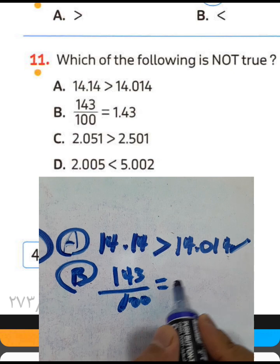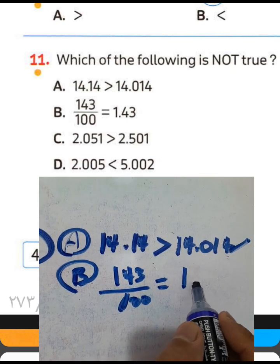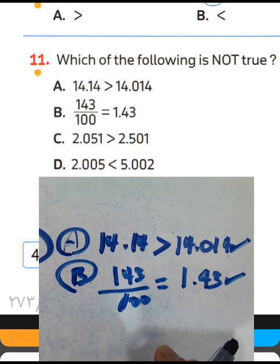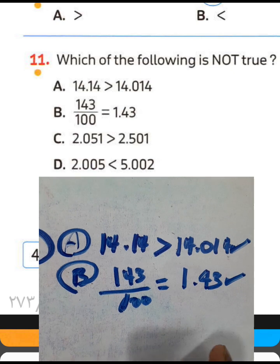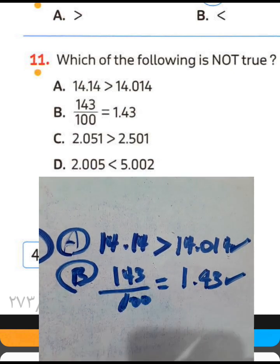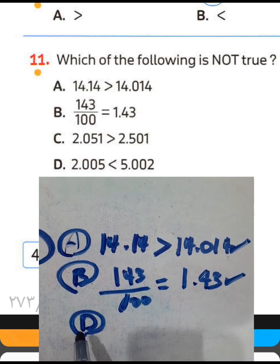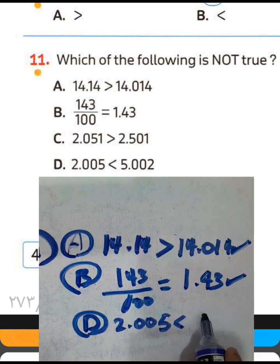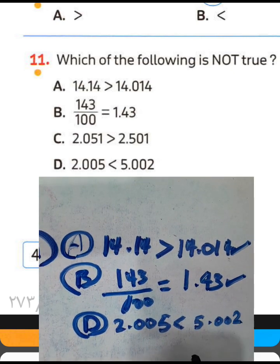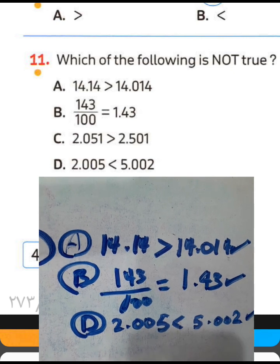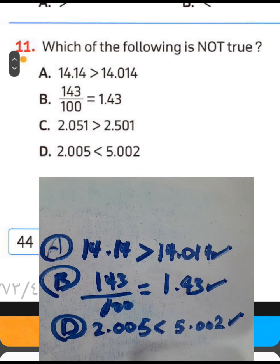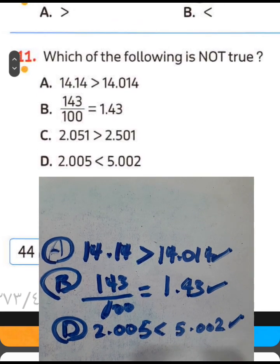Letter B: 143/100 equals 1.43 — that's true, so don't choose letter B. Letter D: 2.005 is less than 5.002 — that's true because 5 is greater than 2. Don't choose letter D. We need to check letter C.